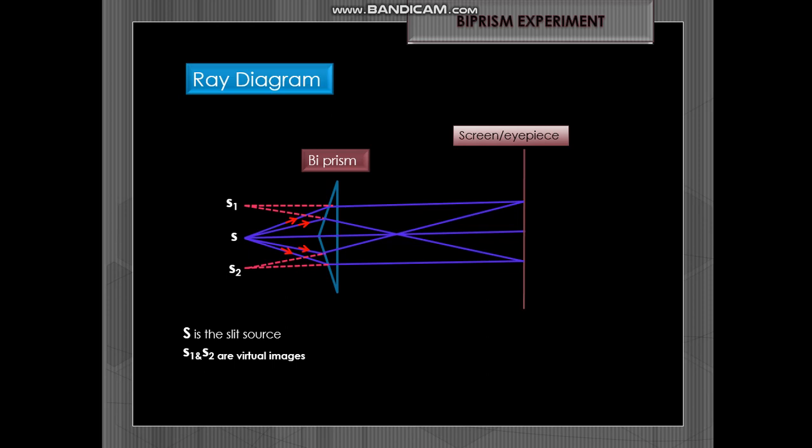It passes and the rays of light will come and they will go back to produce S1 and S2 which are the virtual images. Now these virtual images will act as coherent sources of light producing the interference pattern. This is the region of interference.